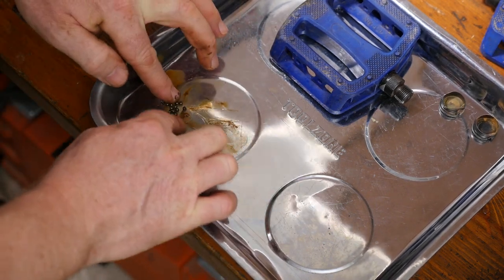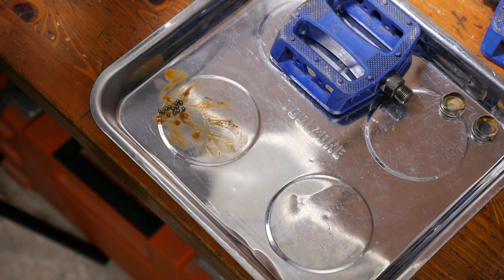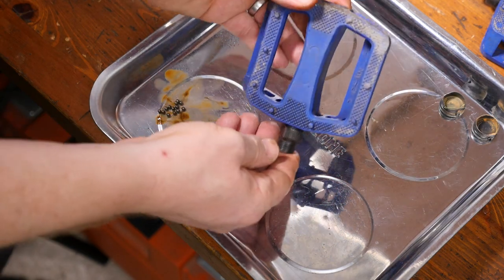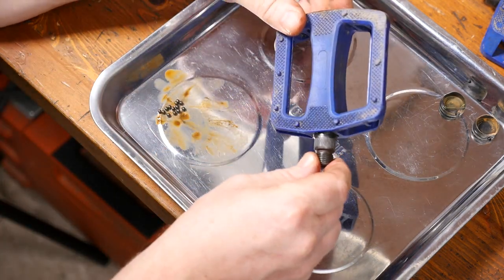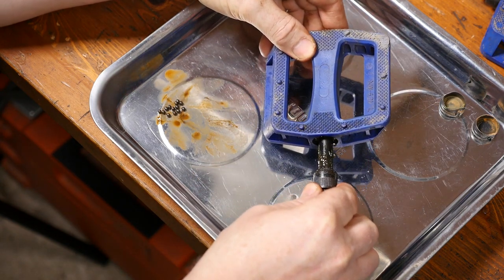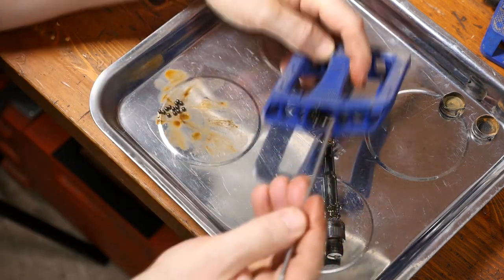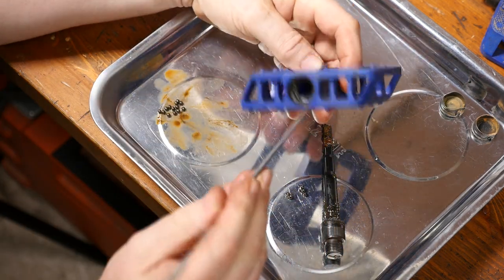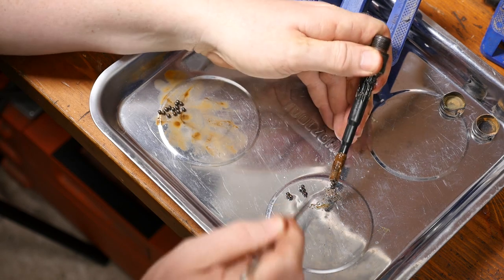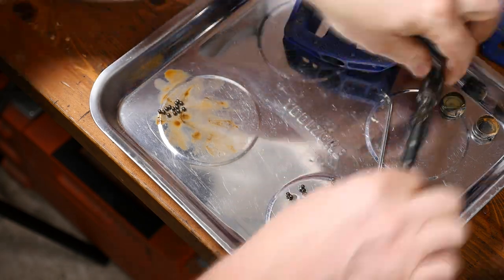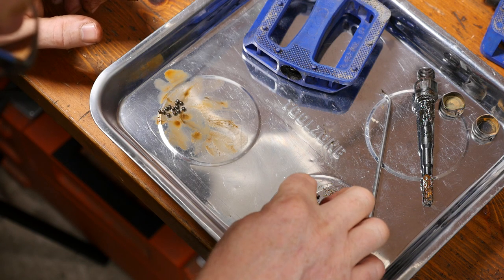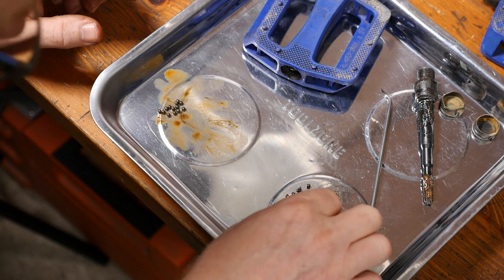So now I can go on to the other end of the pedal and remove the axle. And the bearings will all start to drop out of here. This is why you need to do it over some sort of container, ideally a magnetic one. So I'll speed this part up. I'll just get all the bearings out. And then again I'll count them all. And it's 13 again on this side.